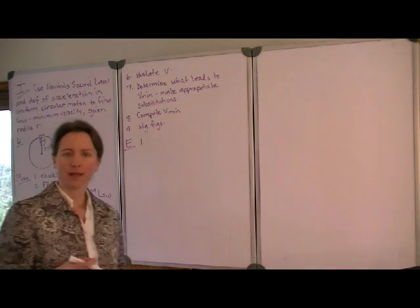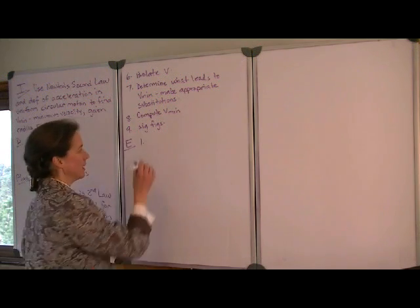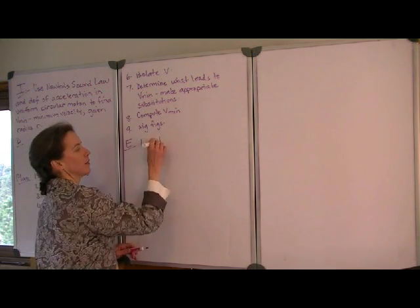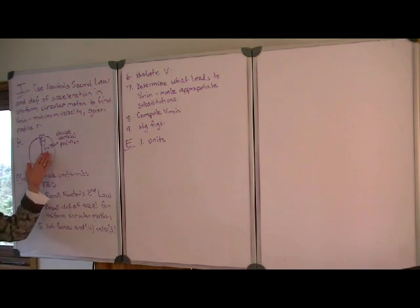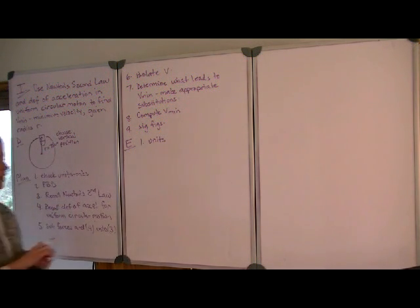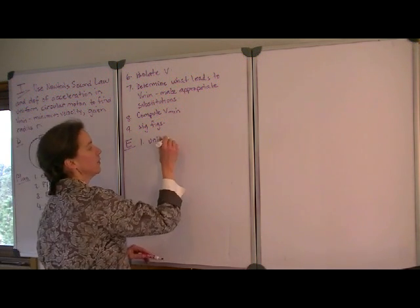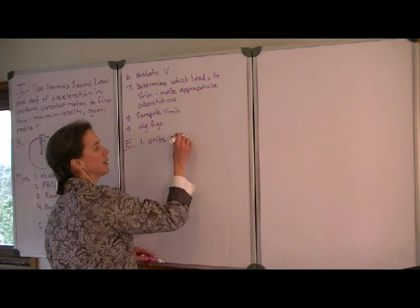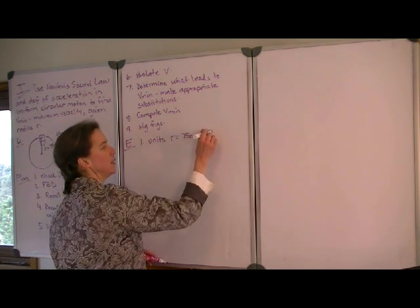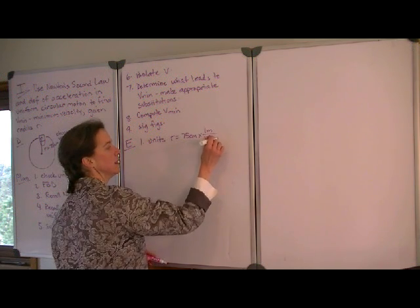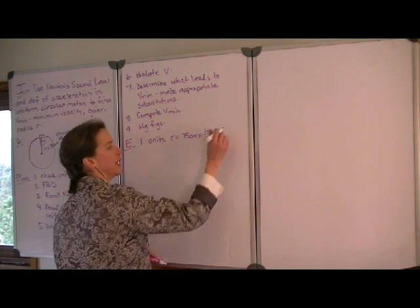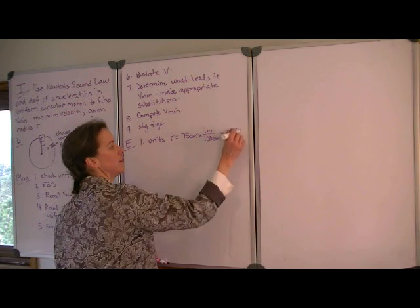Now we're ready to follow our plan and get an answer. Let's start with our units. We're only given one quantity, which is the radius. However, that's in centimeters. So we need to convert radius at 75 centimeters times a meter has 100 centimeters in it. And we get 0.75 meters.